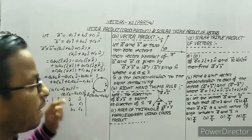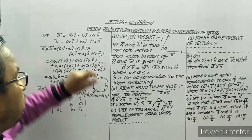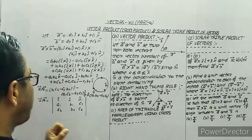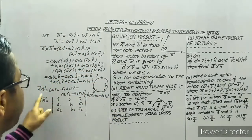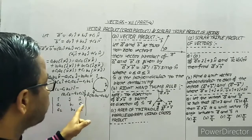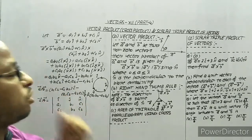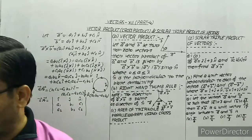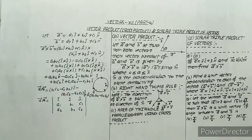So this is the way to find a cross b — this is the overall formula. When solving questions, we will directly find a cross b using this determinant method.